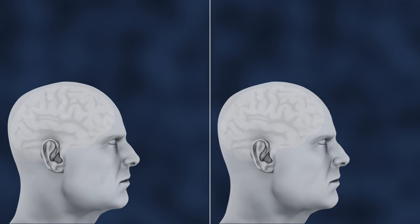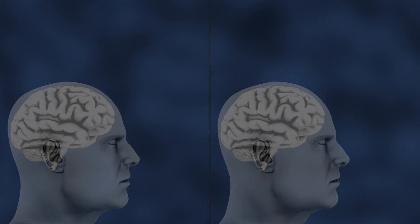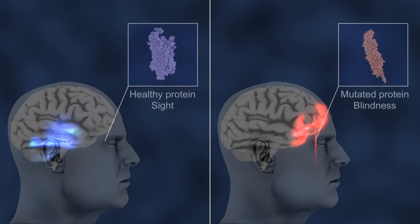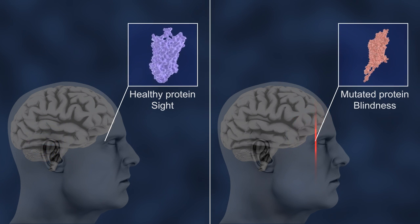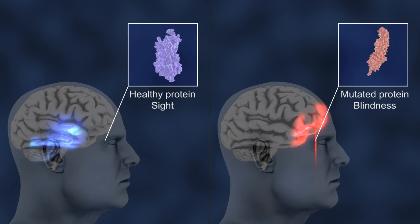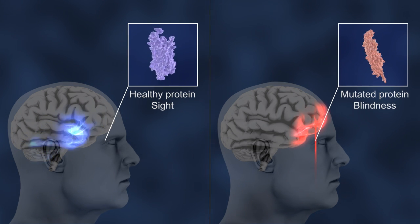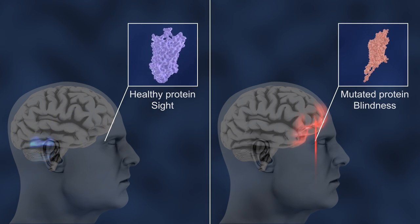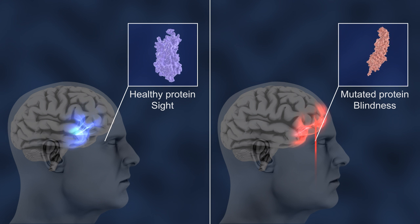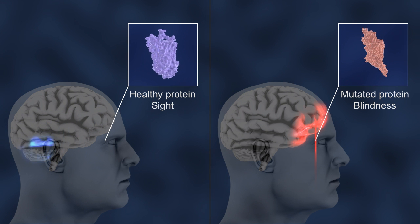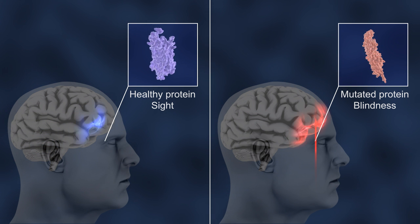For example, DNA mutations that cause structural changes in the light-sensitive proteins located in our eyes can prevent them from stimulating nerve impulses, resulting in congenital blindness.